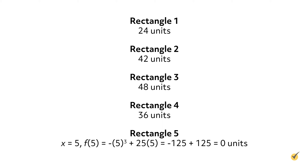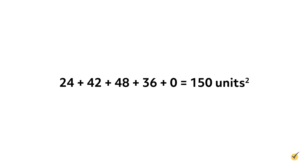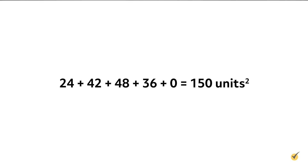Again, the widths of these rectangles are all 1, so their areas are simply equal to their heights. Adding all of these together, the right Riemann sum with five rectangles is 24 + 42 + 48 + 36 + 0 = 150 square units. Coincidentally, this is the same as the left Riemann sum. For this example, they happen to be the same value. However, this is not always—and often isn't—the case with left and right Riemann sums.